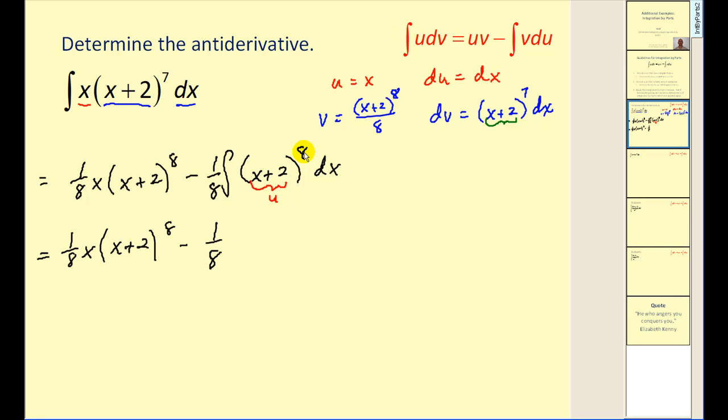So applying the power rule, we'll add one to this exponent, divide by the new exponent and add our constant of integration. Let's go ahead and clean this up. Here we'd have a denominator of 72 and then of course our plus c.